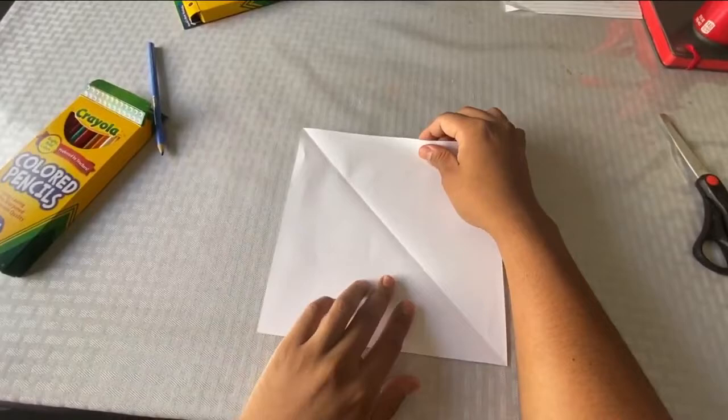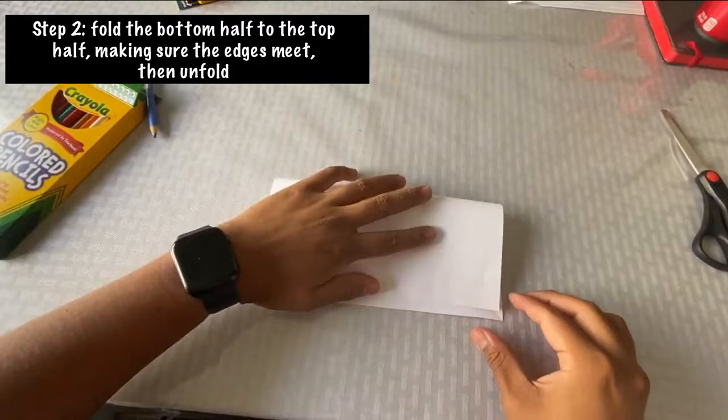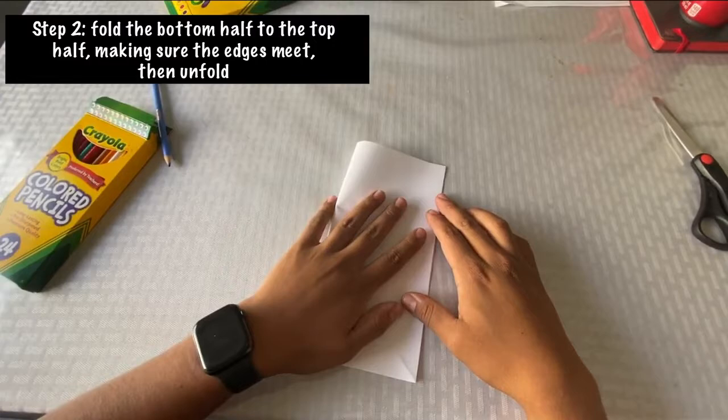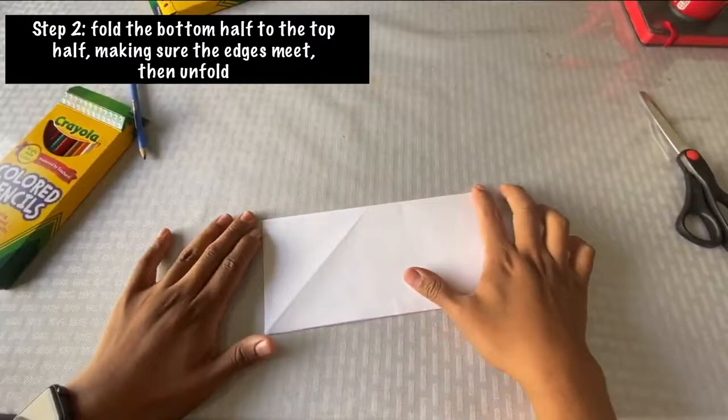Now that we completed our origami paper, we're going to go ahead and start with Step 2. We're going to fold the bottom half to the top half, making sure the edges meet, then unfold it. As we're folding it, make sure you get a good crease on that half.